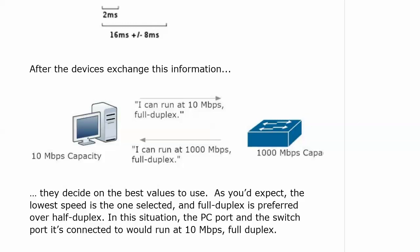As you would expect, the lowest speed is the one that gets selected, and full duplex is always preferred over half duplex. In this situation, the PC port and the switch port it's connected to would agree to run at 10 meg full duplex. Now, another concept I want to introduce early on is letting the switch and the router do the work — it's not being lazy, it's being smart. If you statically configure every port on a Cisco switch with speed and duplex settings, what happens if they change on the other end? If you swap PCs out and get a faster PC or a device that runs at half duplex, you have to remember to go on the switch and manually update that port's settings.